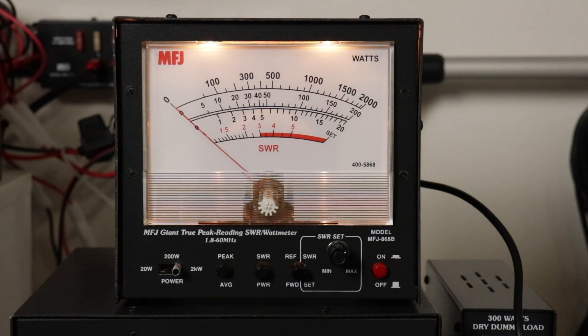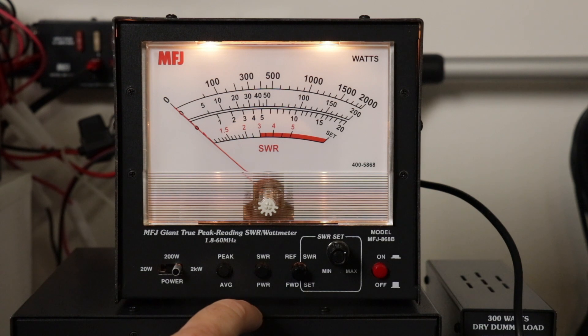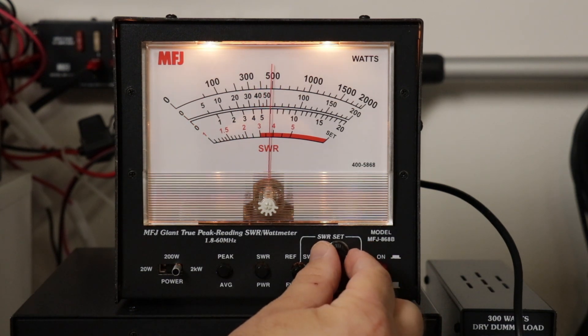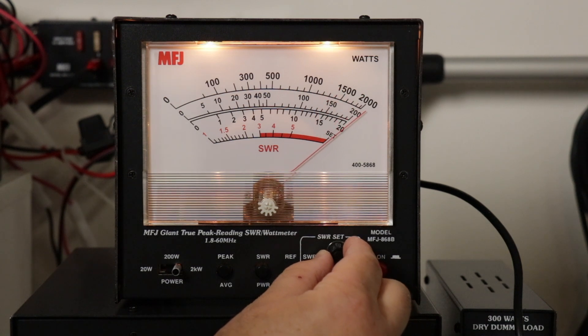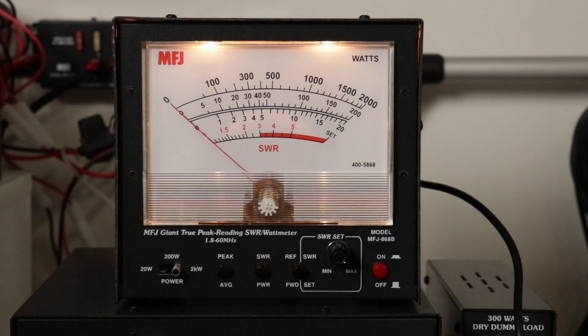Now if you want to check the SWR, where it says SWR power, push in. Key it up, then use this knob to adjust until you get to set. Then push it in, and we're at one to one because obviously I'm using a dummy load.